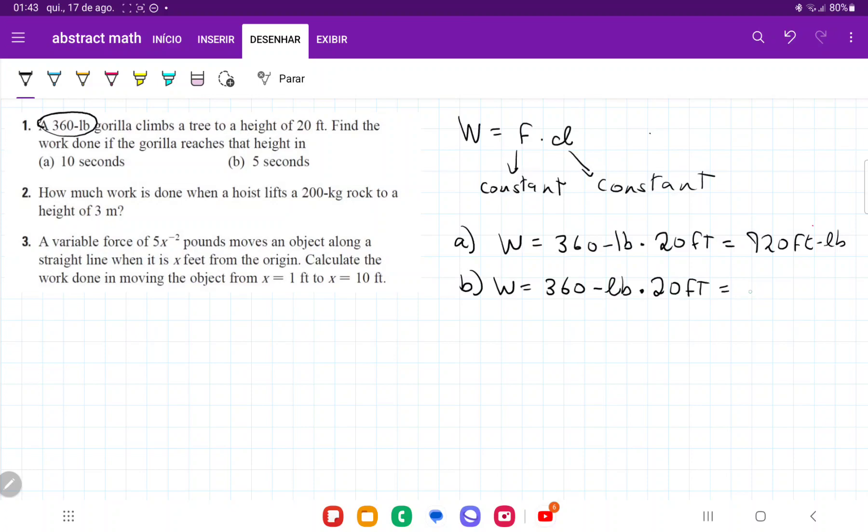So once more, this is still 720 foot-pounds. We can see that for both these cases, the gorilla is doing the same amount of work, which is raising his fixed body weight over a fixed distance.